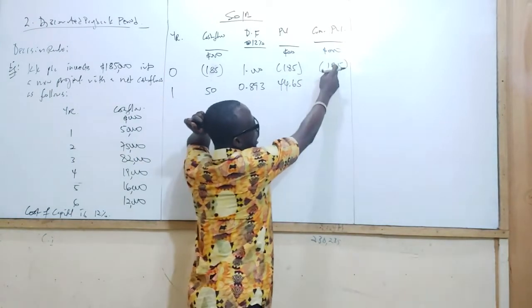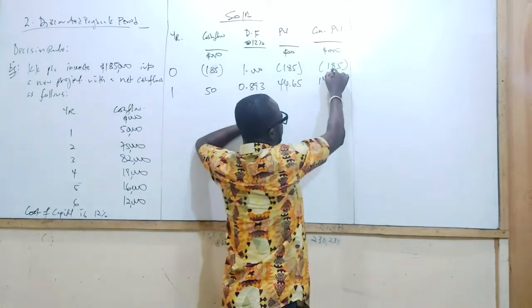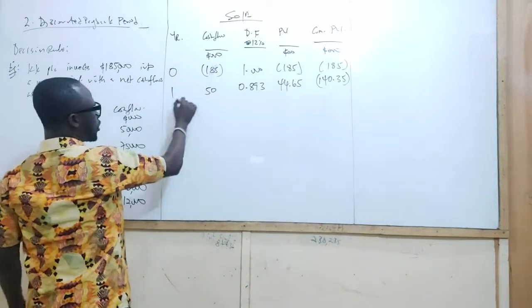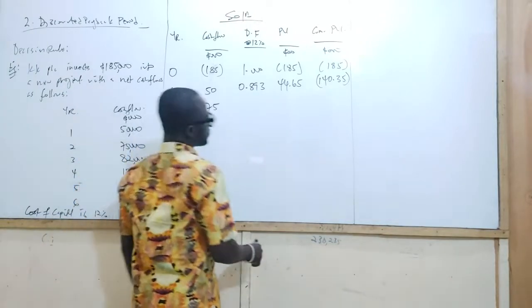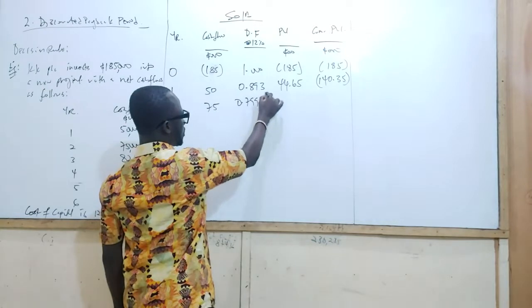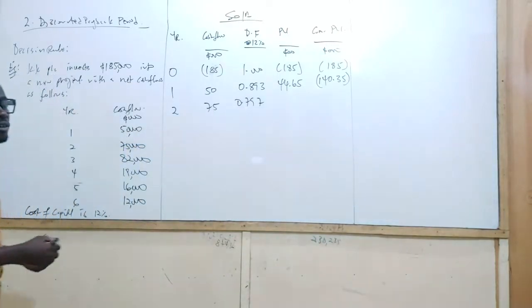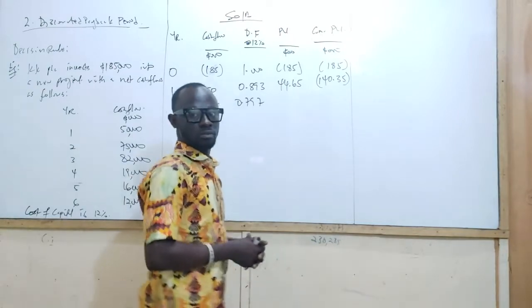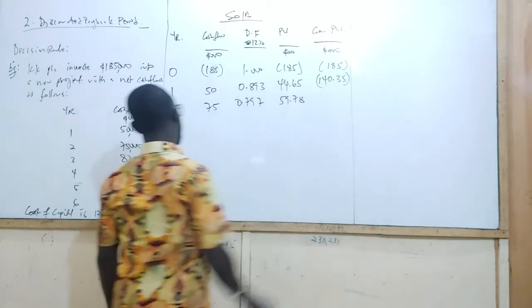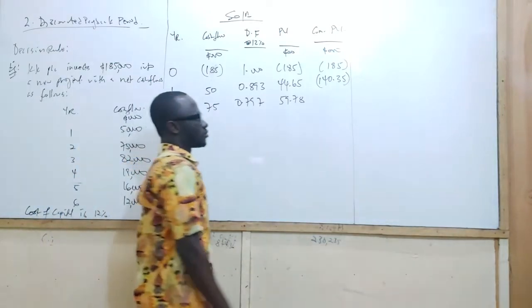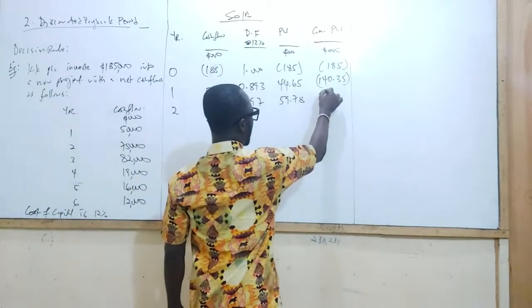That is an addition, so take it from the negative and get our balance: 140.35, still negative. We go to year two — cash flow is 75,000. Go to second period at 12%: discount factor 0.797. Multiply to get present value, then subtract from the balance. Cumulative present value: negative 80.57.